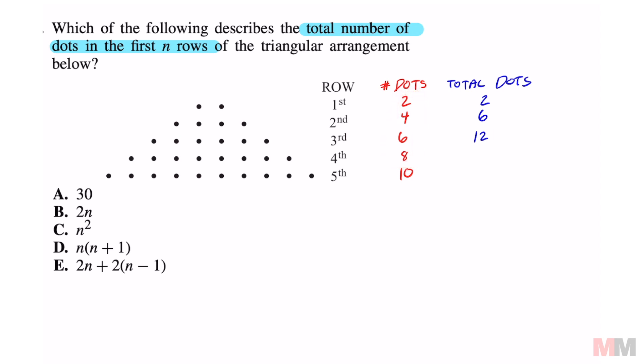Adding up all the number of dots by the fifth row, all of these are going to equal 30. Now let's look at our answer choices.